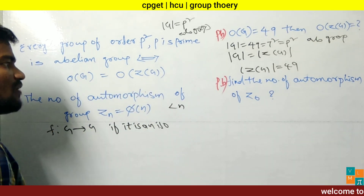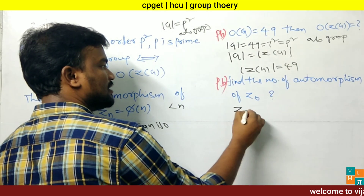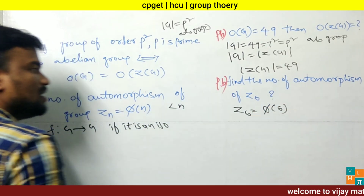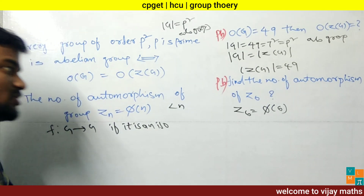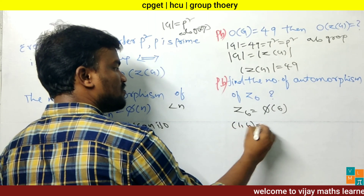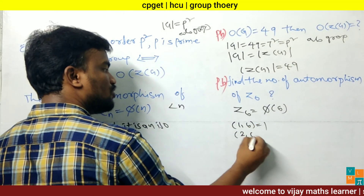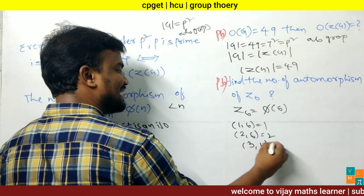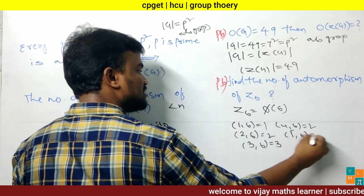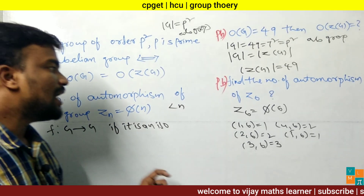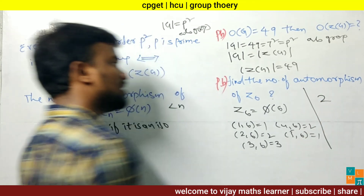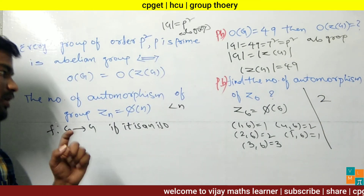Problem: find the number of automorphisms of Z₆. From the result, it equals φ(6), meaning the count of positive integers less than 6 and relatively prime to 6. Checking: 1 is relatively prime to 6, 2 shares factor 2, 3 shares factor 3, 4 shares factor 2, 5 is relatively prime to 6. So 1 and 5 are relatively prime to 6 and less than 6, giving φ(6) = 2. The number of automorphisms of Z₆ is 2.